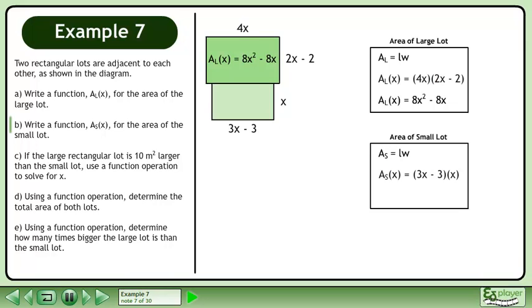The length of the small rectangle is 3x-3 and the width is x. Multiply to get 3x²-3x. This is an algebraic expression representing the area of the small rectangle.